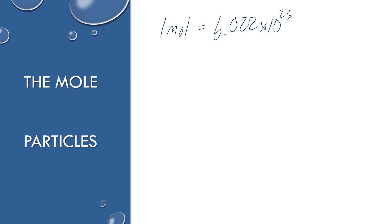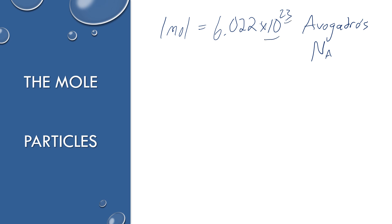And we call this Avogadro's number, which in your data booklet is abbreviated N sub A. It is in your data booklet so you don't have to memorize it, but we use it very frequently so it might get stuck in your memory anyway. It's also why we celebrate Mole Day on October 23rd, although some people celebrate it in June because it's the sixth month.